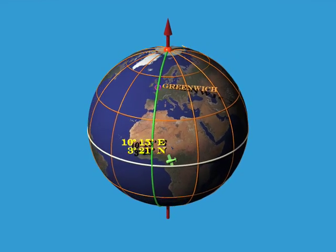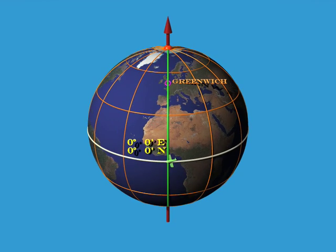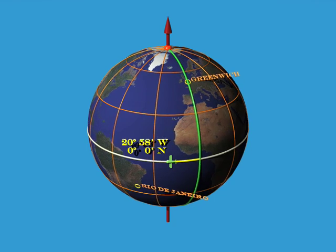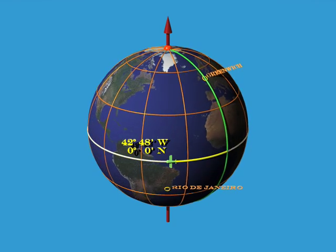Since we need two numbers to specify a location on the surface of the Earth, we say that the sphere is two-dimensional, and mathematicians often call it S2.